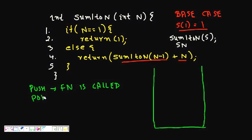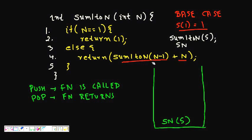We call SN(5), meaning n equals 5. It checks: is n equal to 1? No, so it goes to the else part and returns SN(4) plus 5, executing line 4. SN(5) is now on the stack waiting, and SN(4) is called and pushed onto the stack.